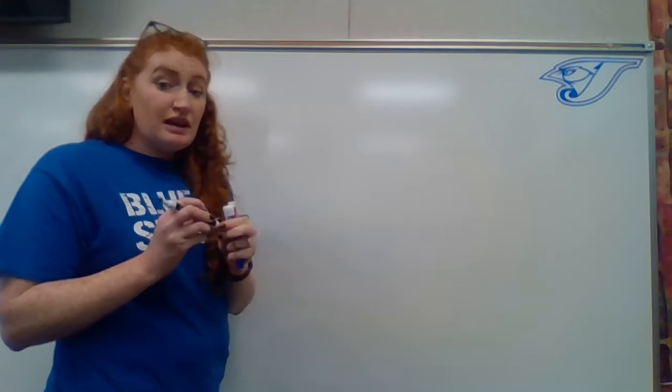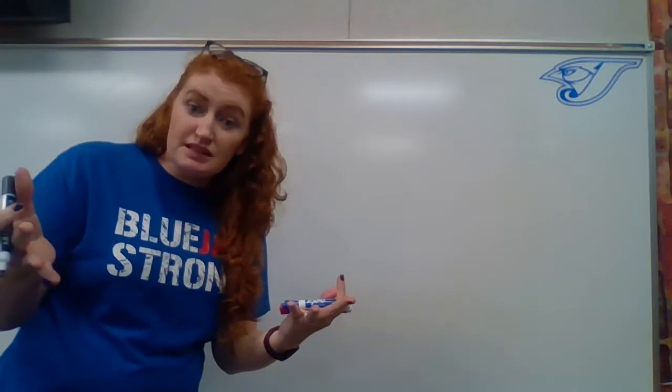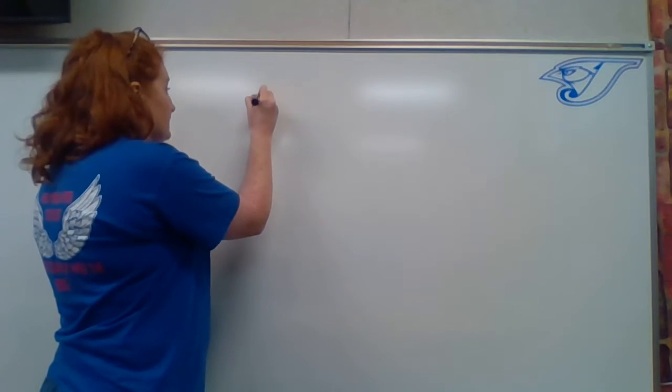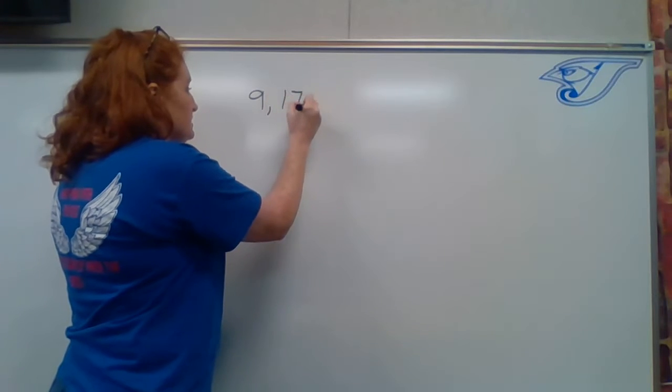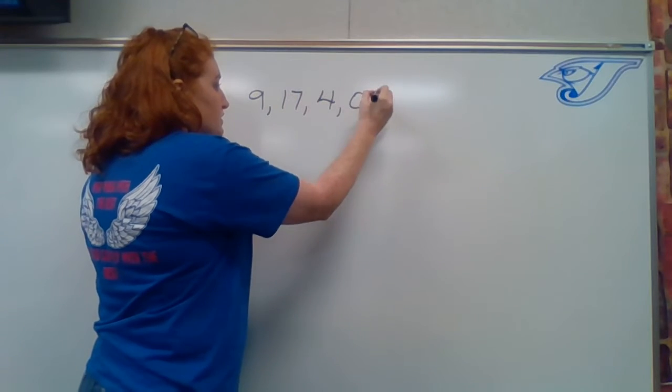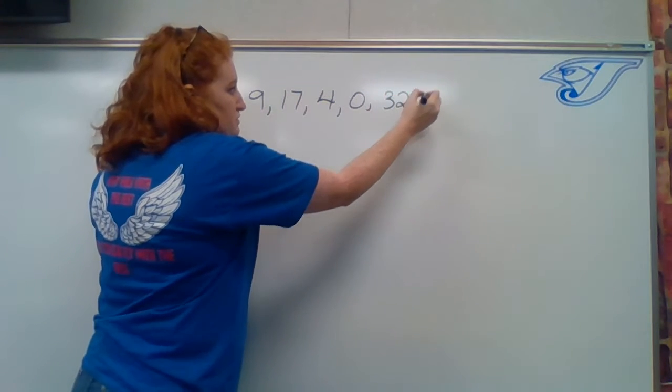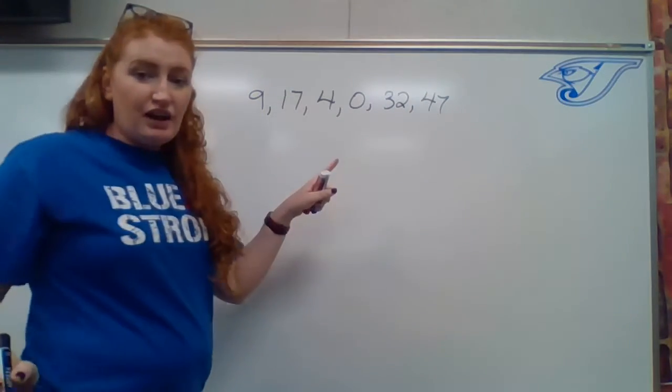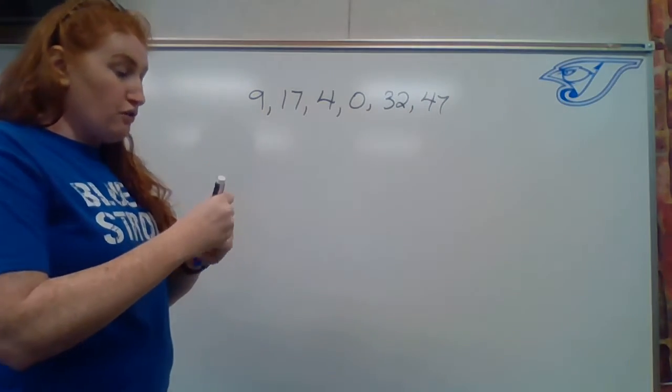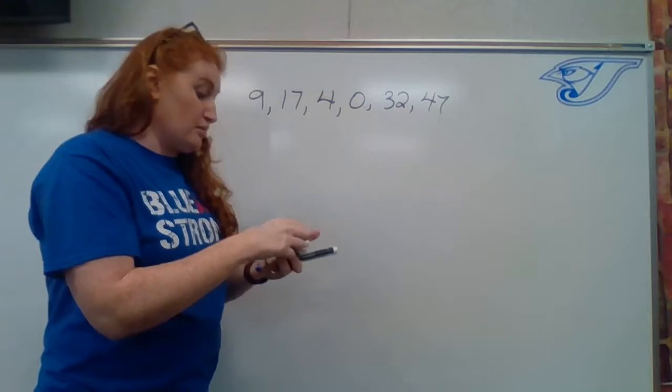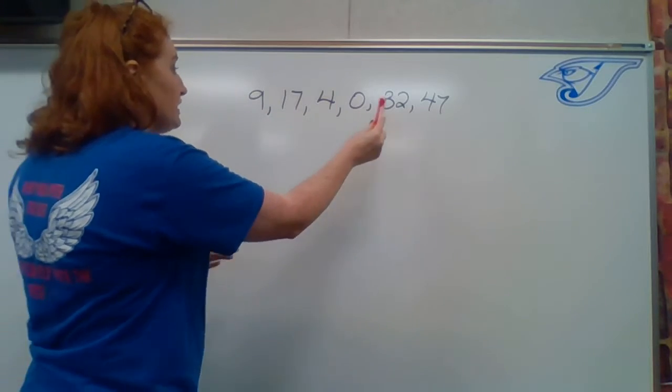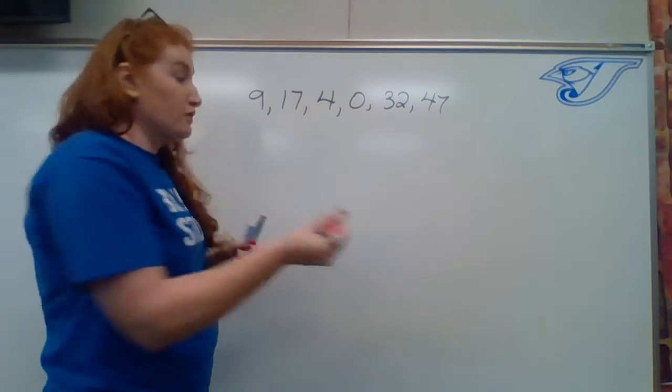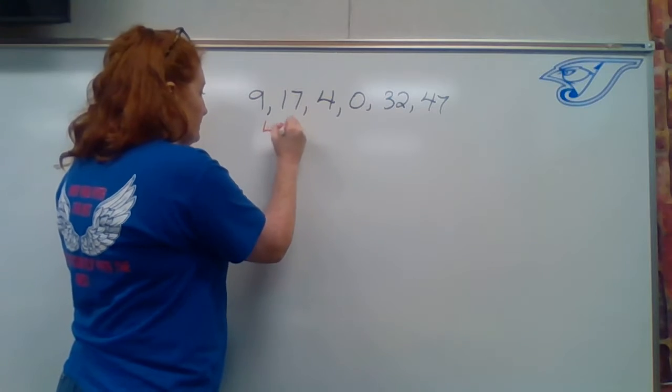So again, we're going to start just like we did with some simple numbers. We've got 9, 17, 4, 0, 32, 47. So we've got our list of numbers. Now we want to go from largest number to smallest number. So we go through our line and we're looking for the number that's the biggest. That's going to be our first one. That's 47.